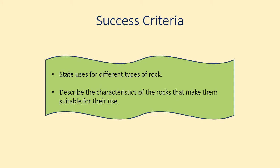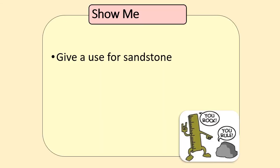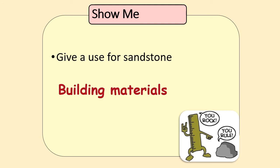So those were some of the different uses of rock and we should be able to describe why the rock is suitable to its use. Now we have a few questions to finish up the video. Give a use for sandstone — sandstone is used for making building materials. Particularly in Paisley and places like Glasgow, the sandy-coloured buildings are all made from sandstone. It's quite a good material for cutting into blocks and it's also impermeable so it doesn't let water through.